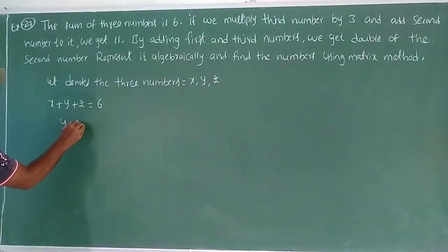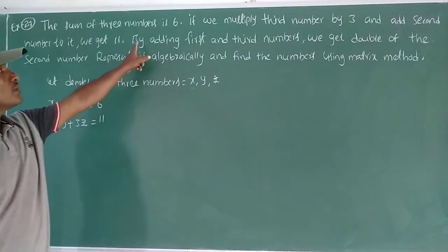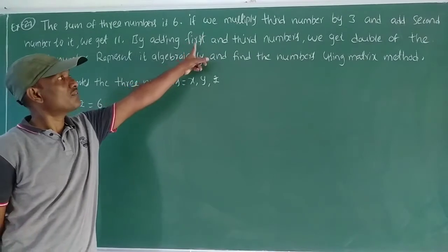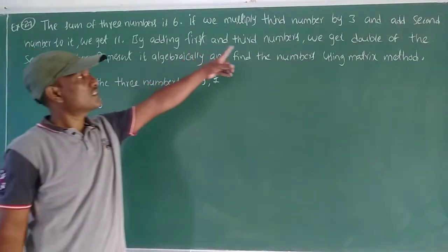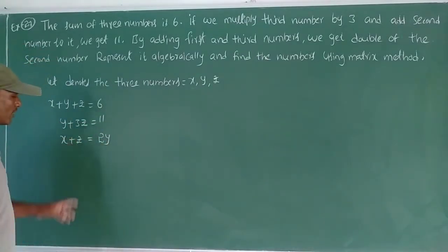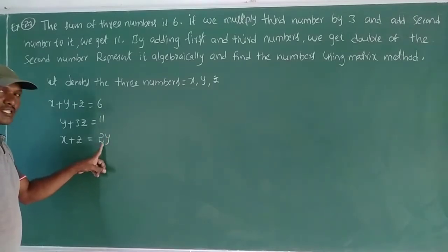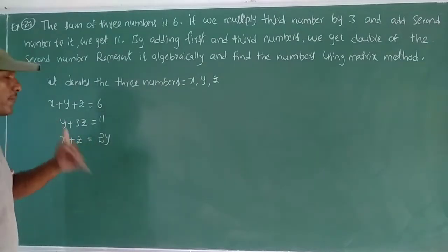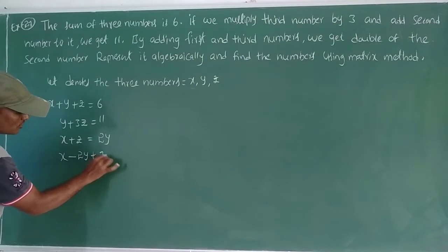If we multiply the third number by 3 and add the second number, we get 11. So y plus 3z equal to 11. This is the second equation. Next, the third equation: by adding first and third — x plus z — we get double of the second number, that is 2y. So x minus 2y plus z equal to 0.